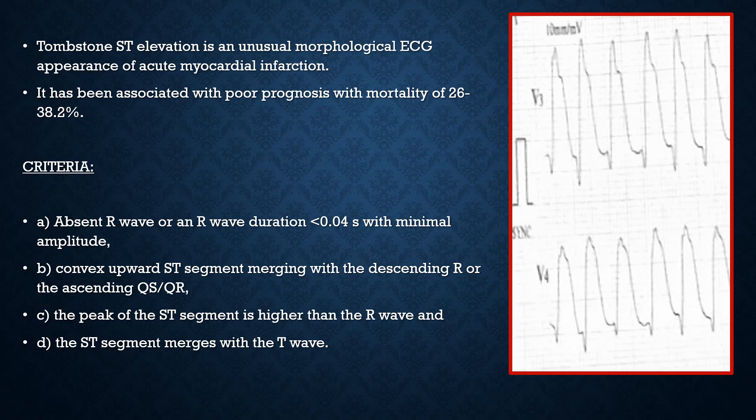The area of myocardium at risk is so large that the patient develops many complications. One of the most common complications with the tombstone pattern is arrhythmia — specifically polymorphic VT. Even when you reperfuse the artery, you can often see polymorphic VT, so you should anticipate this.